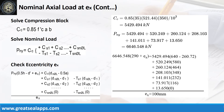Given Fc prime equals 35 MPa, height of stress block equals 521.44 mm, and column width equals 350 mm, the force of the compression block is 5,429.494 kN. By summing up all the forces, the nominal axial load is 6,646.548 kN.